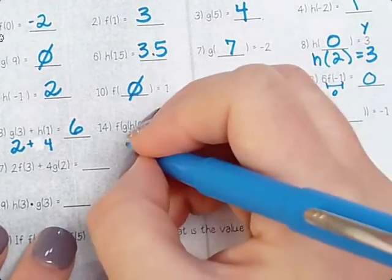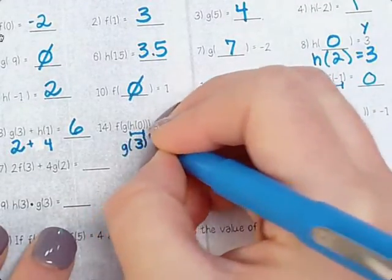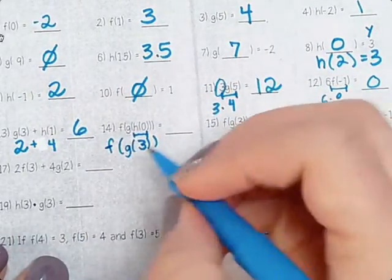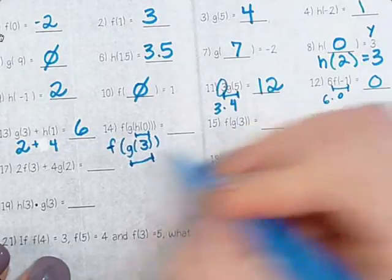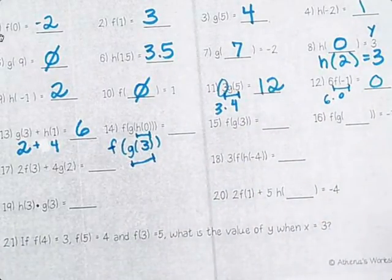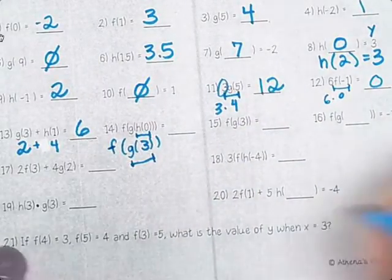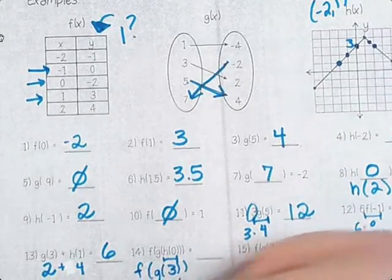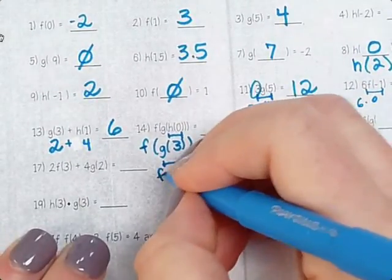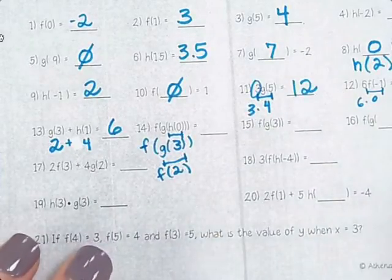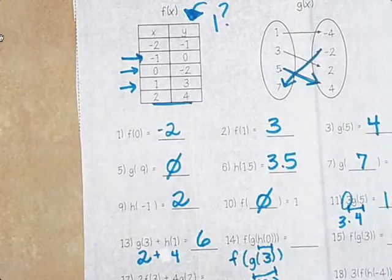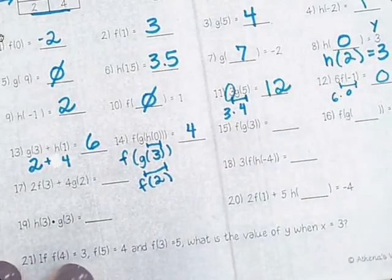And then rewrite everything. So g(3). So now we need to do g(3). Now when x is 3, what is y? 2. So now it's f(2), which is what? 4. f(2) is 4. So all that work for 4.